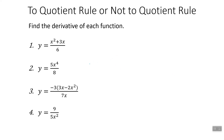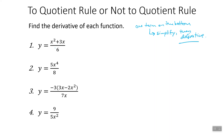There are some times where instead of doing the quotient rule, we can just do a regular old power rule. If there's just one term in the denominator, we usually want to simplify instead of doing the quotient rule. So we simplify first and then take the derivative. We can just divide each term by 6: this becomes x squared over 6 plus 3x over 6, or one sixth x squared plus one half x.